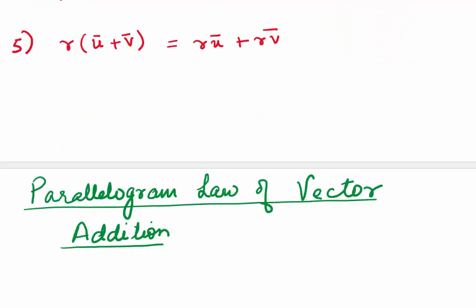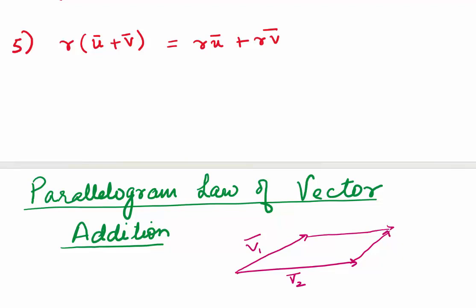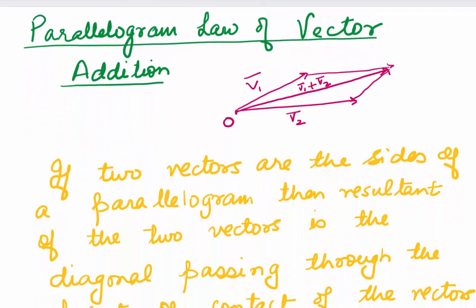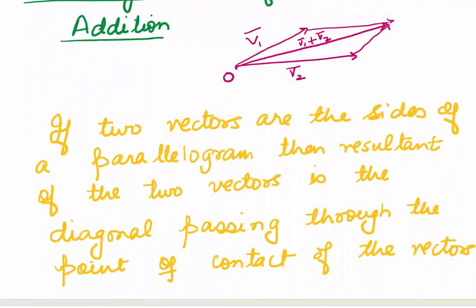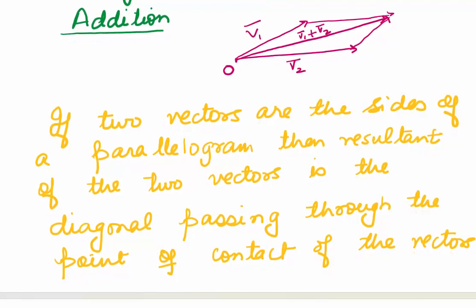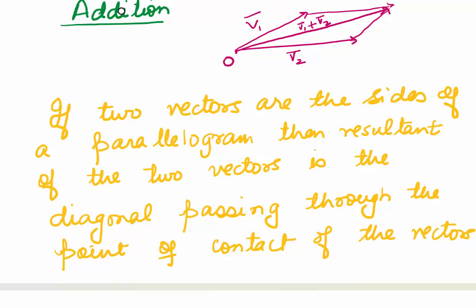Let's look at geometrically what vector addition means — it can be explained using the parallelogram law of vector addition. This law states that if I have two vectors v1 and v2, and they are the sides of a parallelogram, then the sum of the two vectors can be found by the diagonal of the parallelogram. If the point of contact of the two vectors is O, then the diagonal is nothing but the sum of the two vectors — the resultant is the diagonal passing through the point of contact.